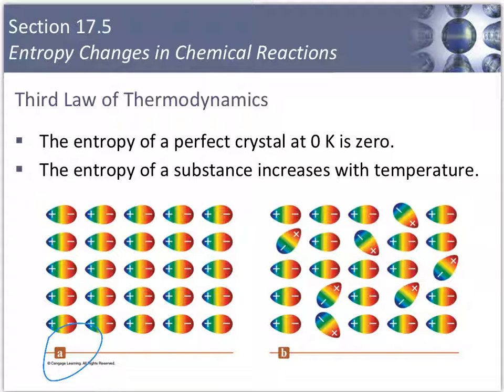At 0 Kelvin, which we refer to as absolute 0, virtually all particle motion stops. So this is how we are able to have this perfect crystal.